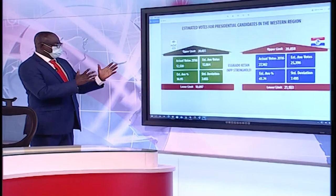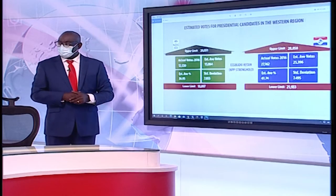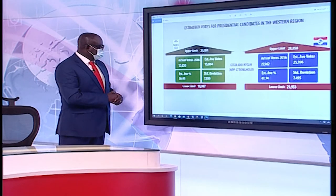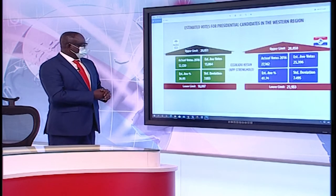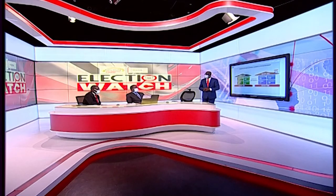Esikadu Kitan is another NPP stronghold. Their estimated average is about 61.74%, translating to 25,000 plus votes, but they actually gained 27,000 — almost 2,000 votes additional. NDC's estimated average was 15,000 votes, but they actually had 12,000, dropping about 2,500 votes, most of which were shared between NPP and other parties.